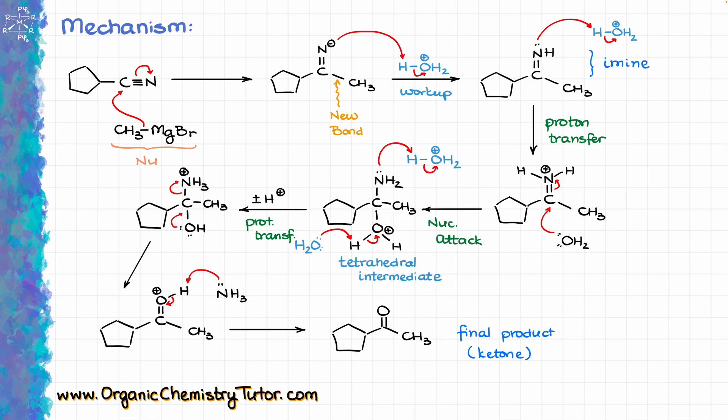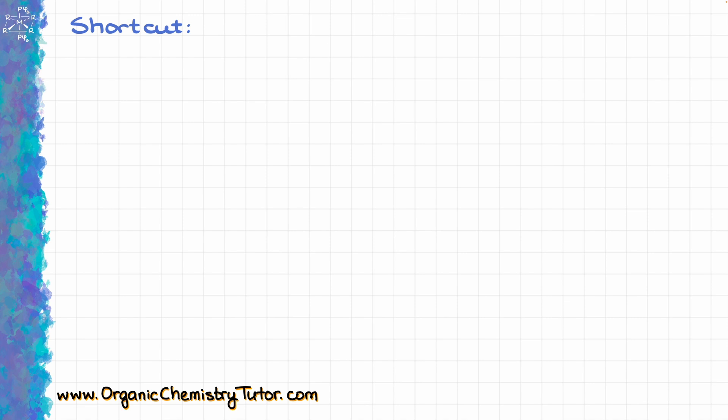So as you can see, the actual Grignard reaction here is pretty simple, it is just a single nucleophilic attack on our nitrile from the Grignard reagent, giving us a negatively charged intermediate, and the rest of this long mechanism is just essentially an imine hydrolysis that leads us towards the formation of the final product, which as I've mentioned is our ketone. Now of course, working through the mechanism every single time is going to be quite tedious, so you can use a shortcut to easily visualize the product without having to go through every single step of the mechanism here.